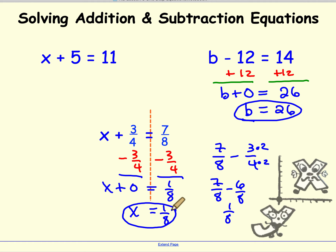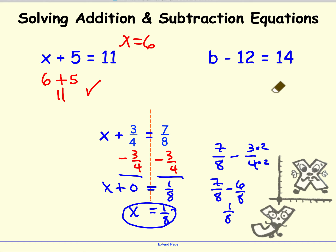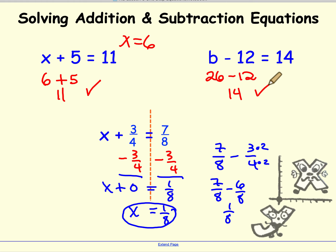One thing we can always do with algebra is check and verify our answer. For the first equation, our solution was 6. We substitute back: what is 6 plus 5? 11. Did we get the same thing on both sides? Yes. For the second equation, our solution was 26. We rewrite the equation substituting 26 for the variable and evaluate: 26 take away 12 is 14. Did we get the same thing on both sides? Yes — so we know we had the correct solution.